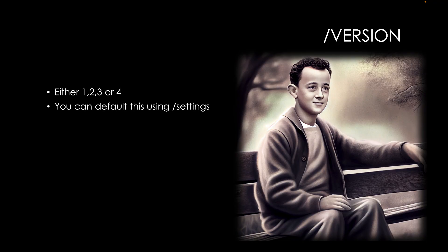First off, let's look at the version parameter. The version parameter allows you to generate AI art using previous MidJourney algorithms. As you go back in time and use the earlier versions, you tend to end up with more abstract, more incoherent artwork using those older algorithms.